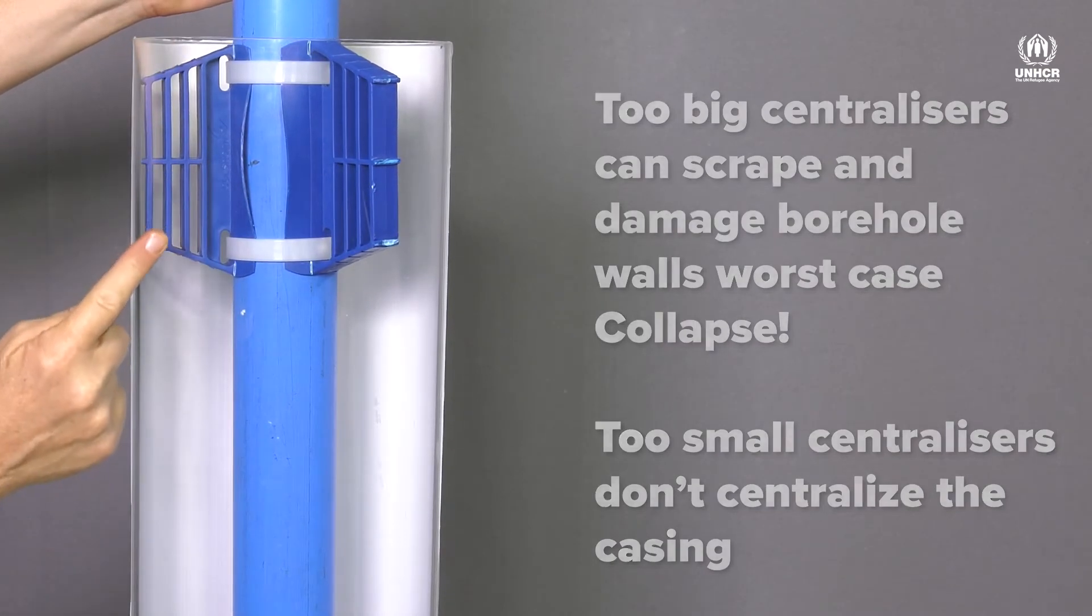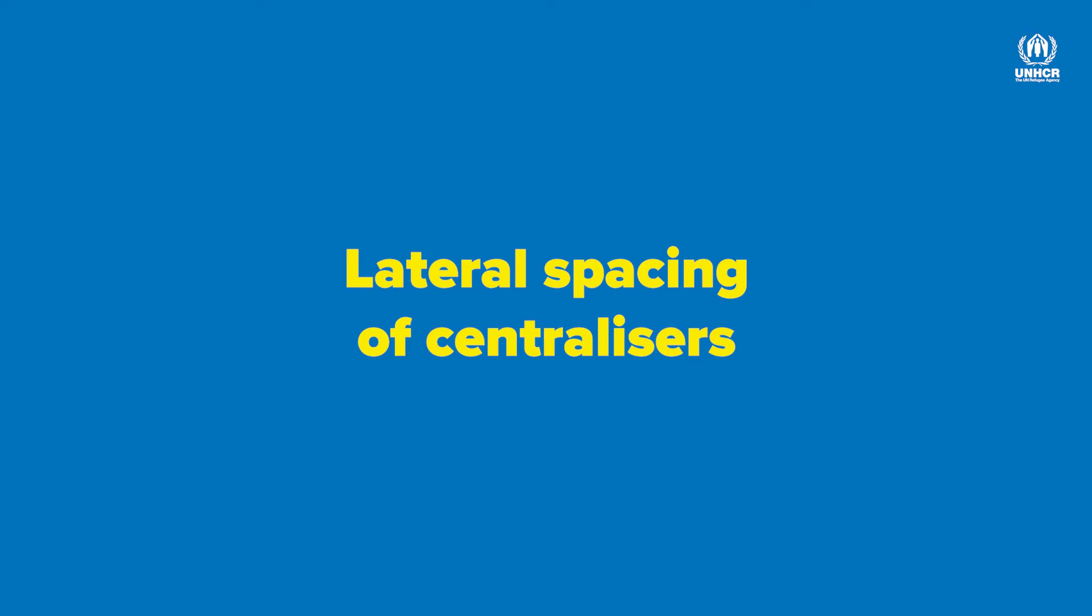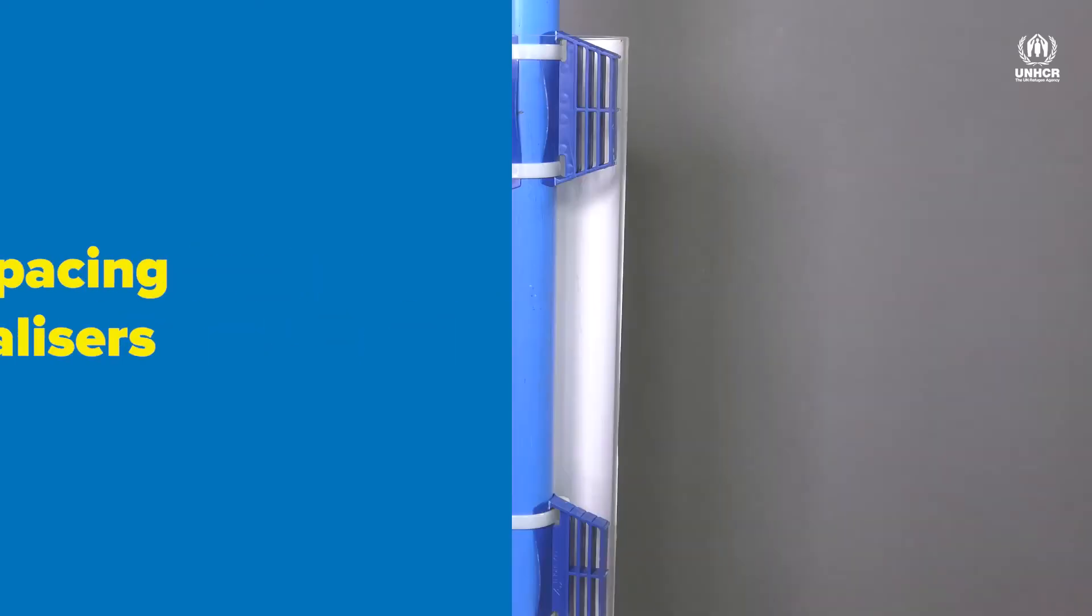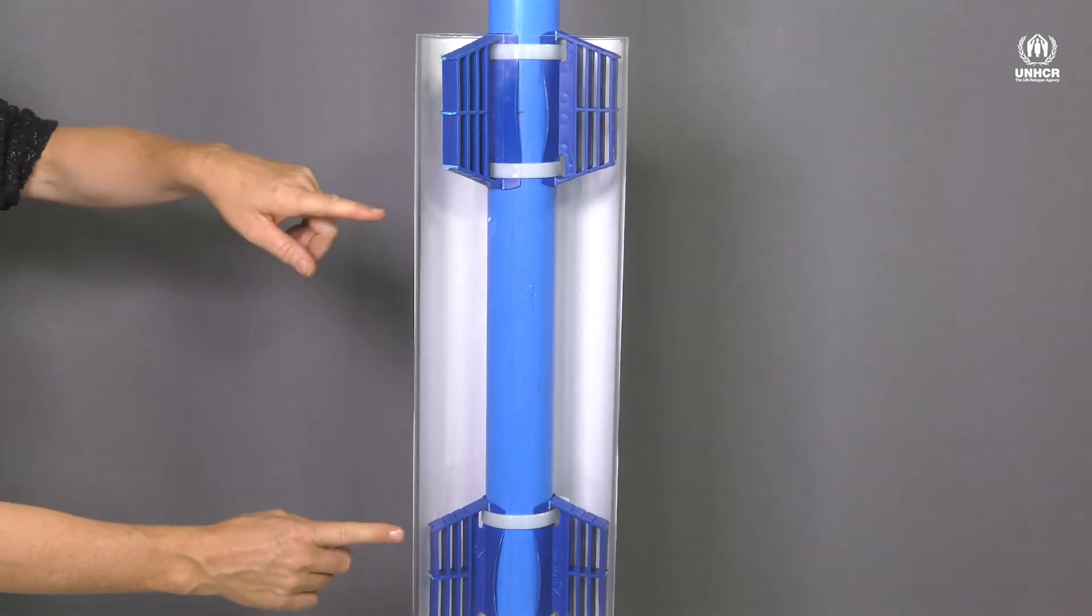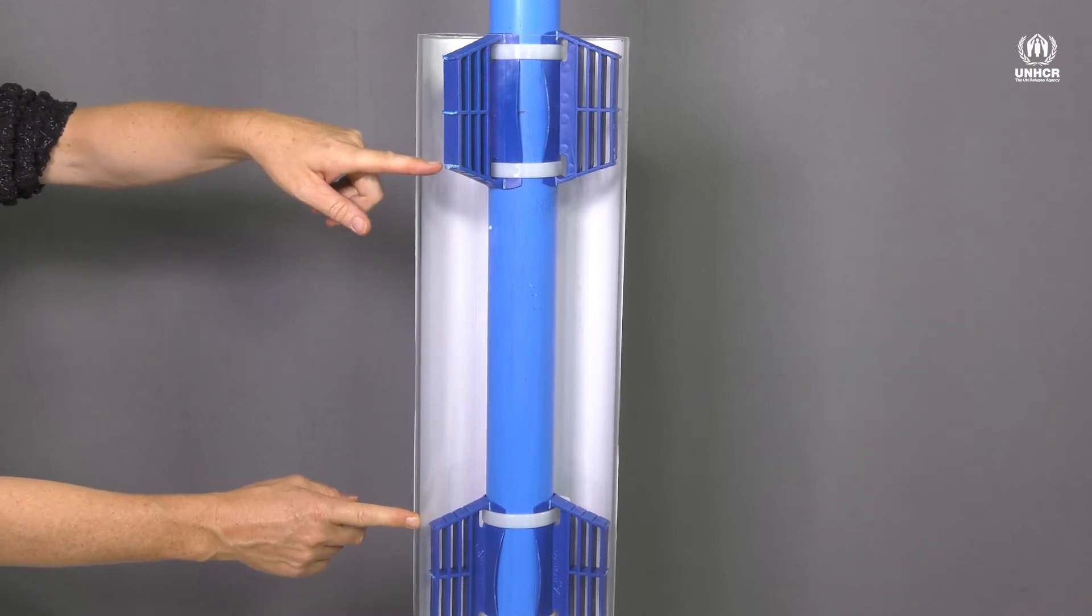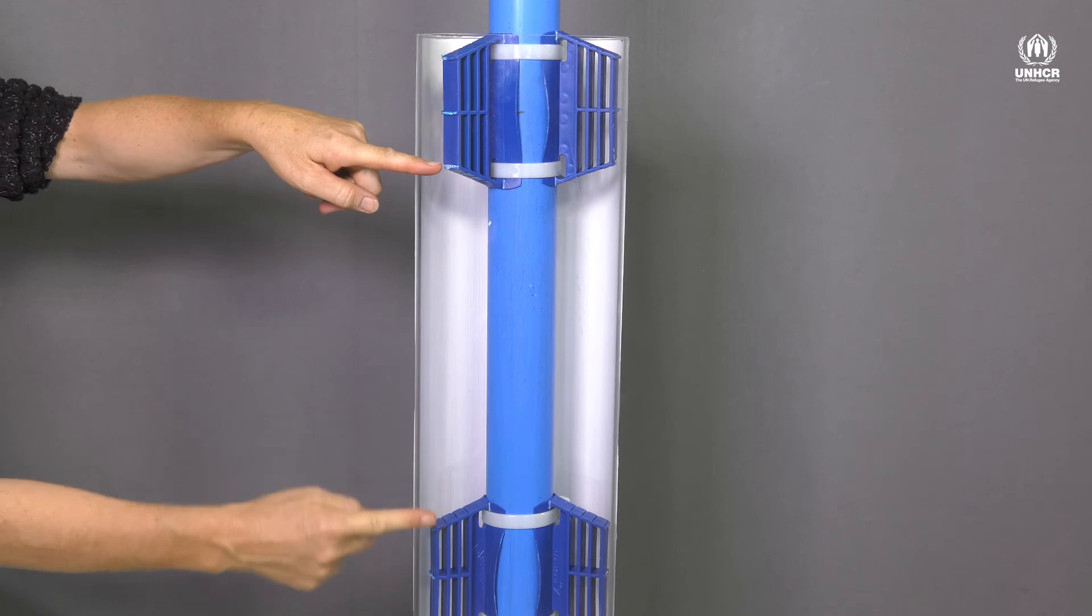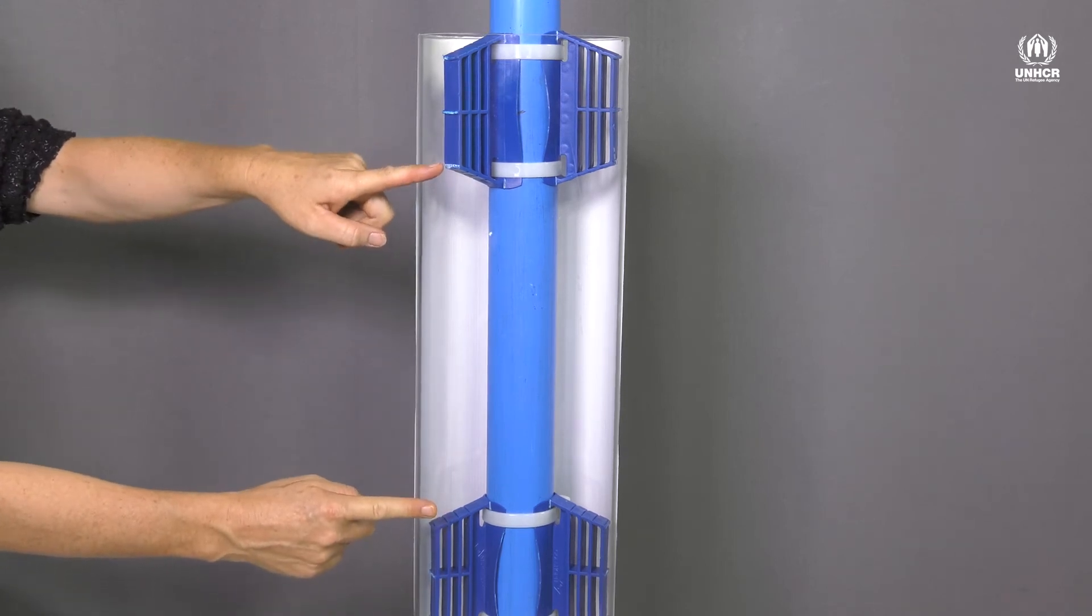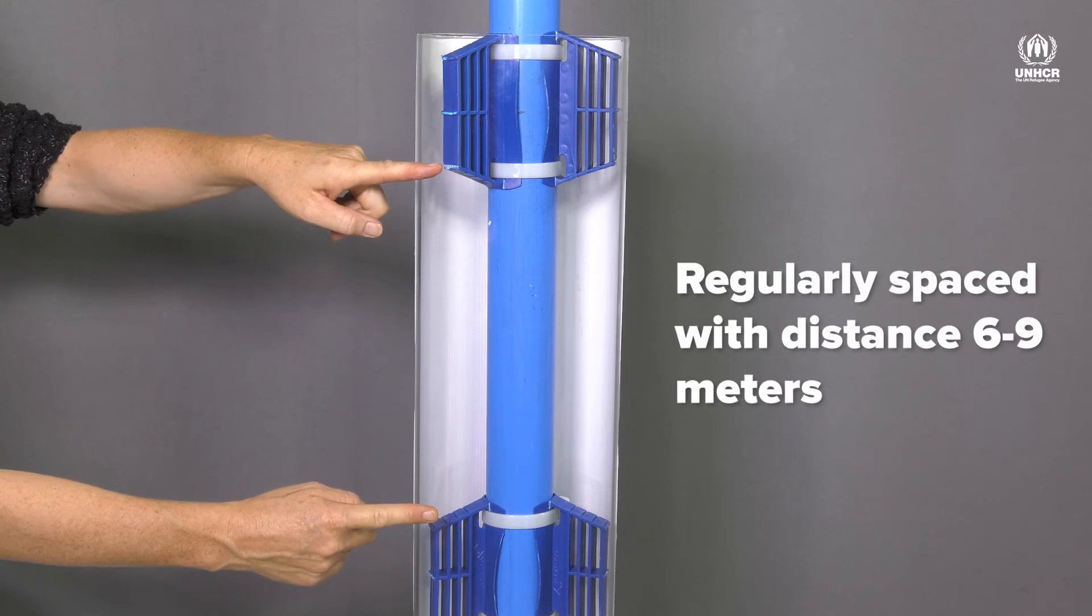OK, thanks. How many centralisers do we need to put in total, then? So the total number of centralisers will depend on the depth of the borehole and also the length of casing to be used. Centralisers are fitted at a regular spacing all the way along the length of the casing installation, typically at about 6 to 9 metre intervals.